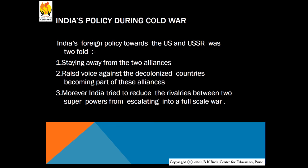The last point is India's policy during the Cold War. India's foreign policy towards the US and USSR was twofold: first, staying away from the two alliances; and second, raising its voice against decolonized countries becoming part of either alliance. Moreover, India tried to reduce rivalries between the two superpowers from escalating into a full-scale war. These are the main important topics of the chapter called the Cold War Era. Hope you understand this chapter — if you have any queries, you can contact me over Zoom. Details will be forwarded by the school. Thank you.